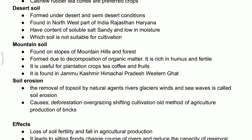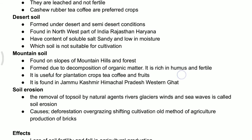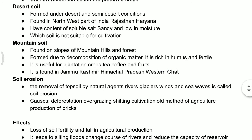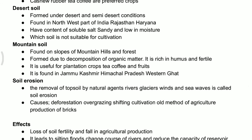The last soil is mountain soil. As the name tells you, this type of soil can be seen in mountain areas, hilly areas, and forest areas. It is found on the slopes of mountains, hills, and forests. This soil is formed due to the decomposition of organic matter — the leaves of trees and organic content mixed with the soil — which leads to the creation of mountain soil.